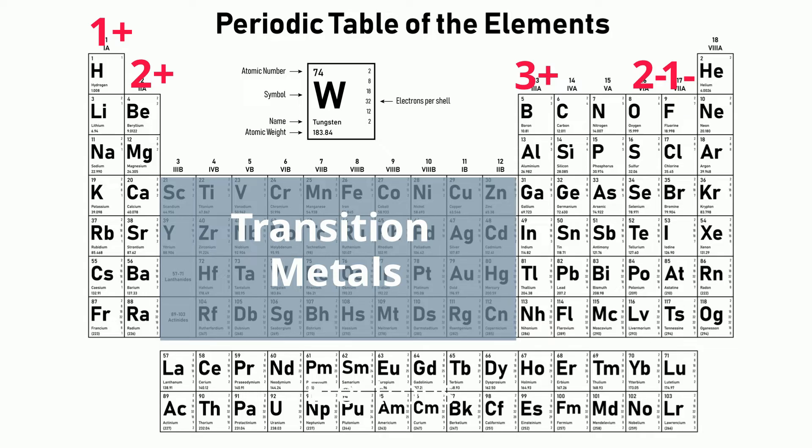In group 5A, the non-metals in arsenic have a 3 negative charge. Group 4A has carbon, so you may see it labeled as 4 negative ions and 4 positive ions.